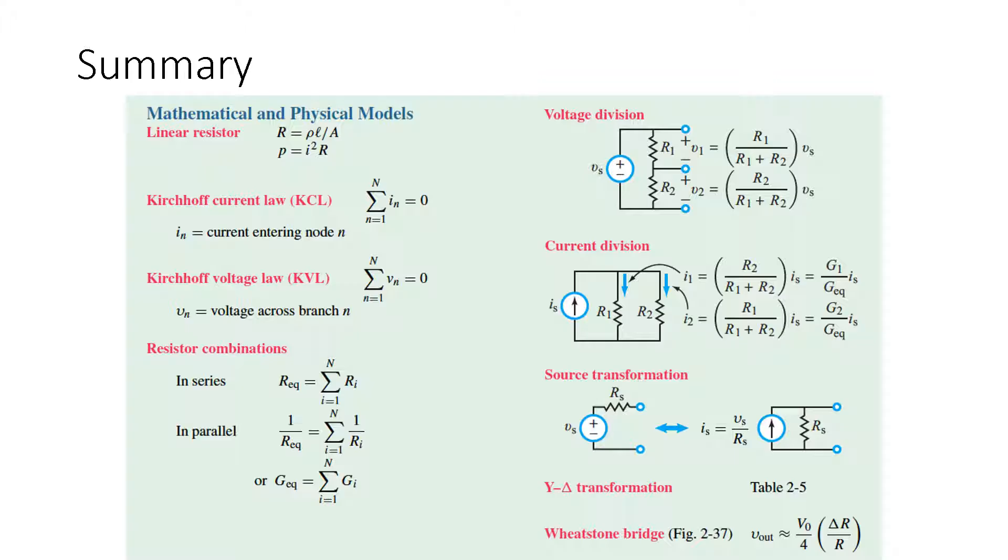For resistor combinations in series resistors, you just add them up. A 3 ohm resistor in series with a 1 ohm resistor: 3 plus 1 is 4 ohms, and you can make a new resistor with the total equivalence.